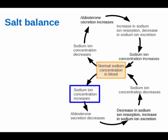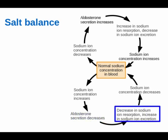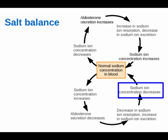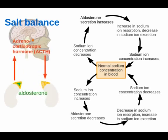What happens if sodium ion concentration increases — there are more sodium ions in the blood? Aldosterone secretion decreases, leading to a decrease in sodium ion resorption and an increase in sodium ion excretion. More sodium ions are lost, and the normal sodium concentration of the blood is restored. The detector mechanism here operates through adrenocorticotropic hormone, ACTH, which we've seen previously. This is another negative feedback loop involved in homeostasis.